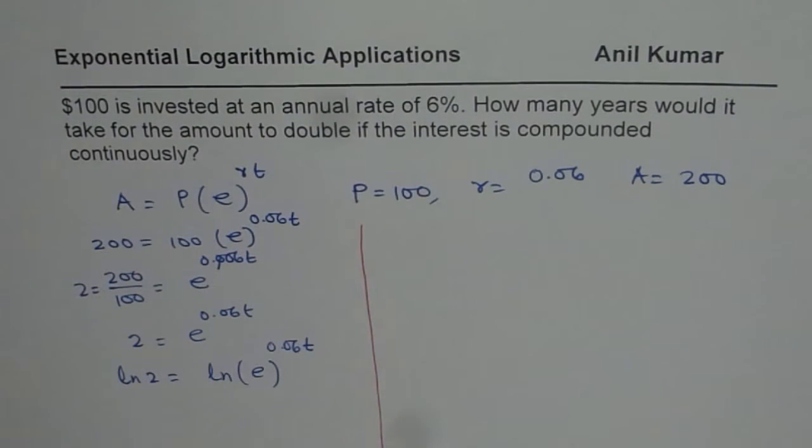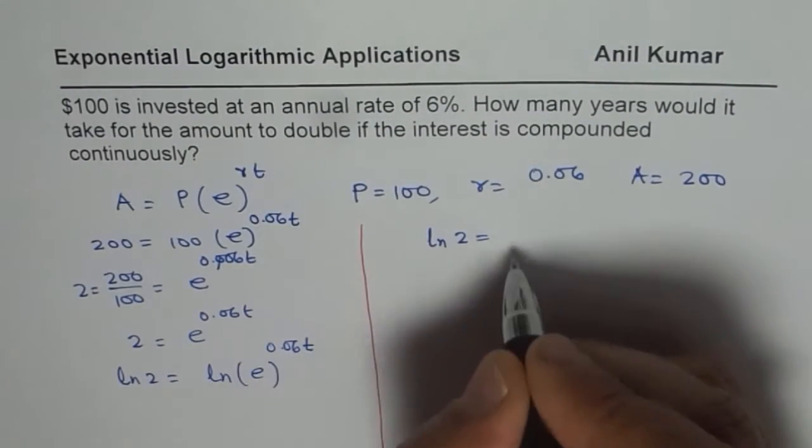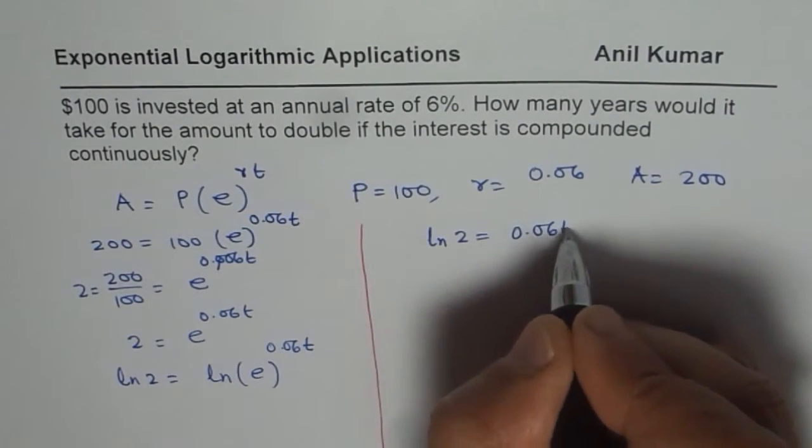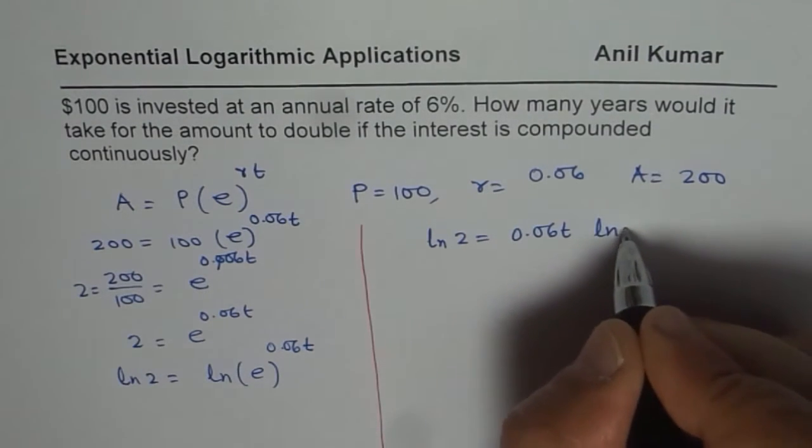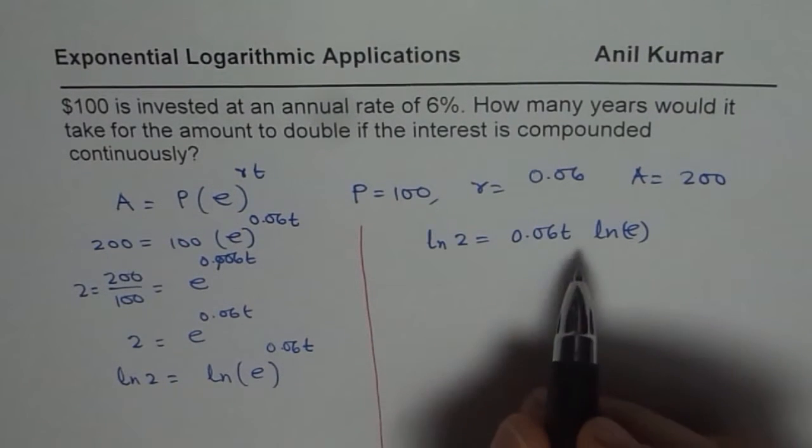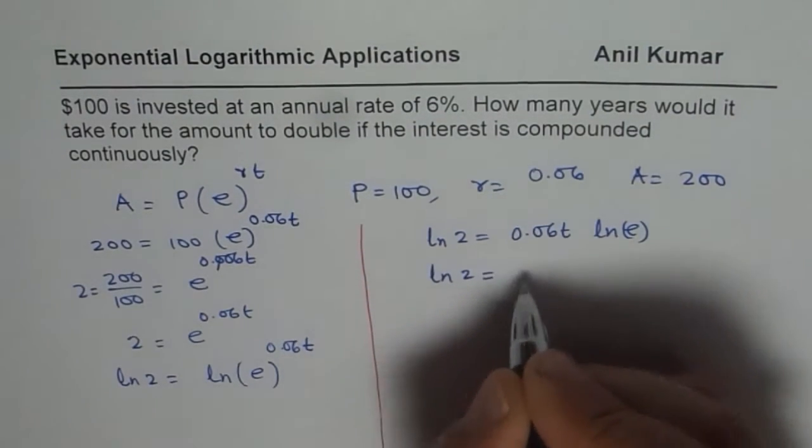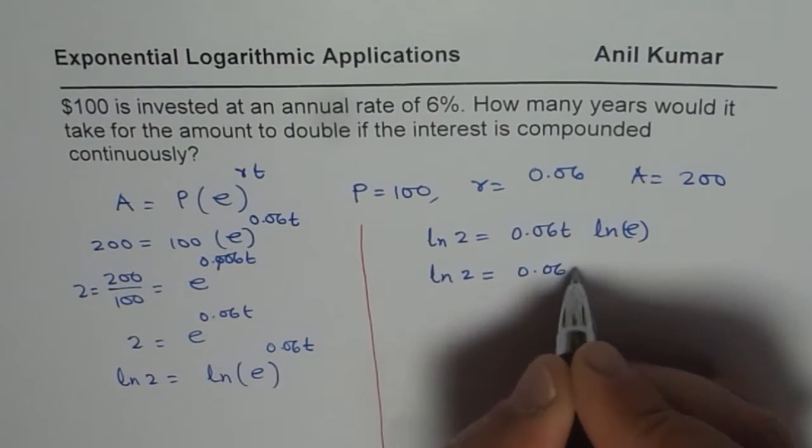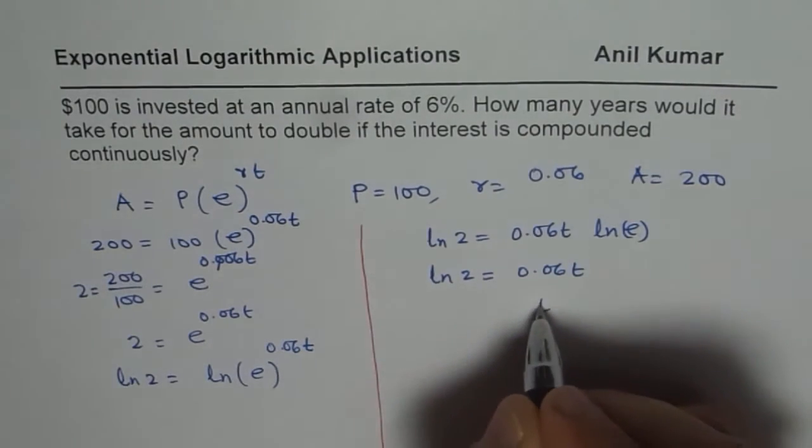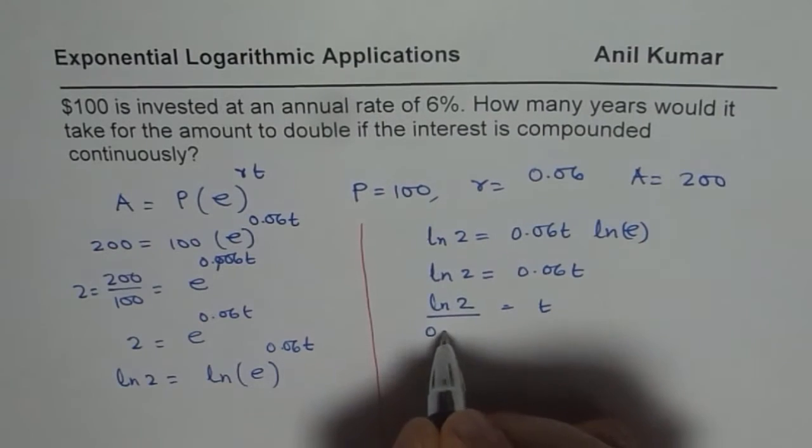So we could write this as ln 2 is equal to 0.06t times ln e. And what is ln e? ln e is 1. Therefore, we use log to the base e whenever exponential equations are involved. So this is just 1. So we get ln 2 equals to 0.06t and t should be equals to ln 2 divided by 0.06.